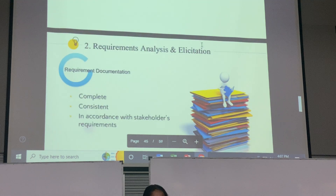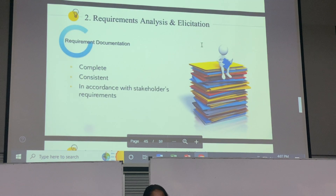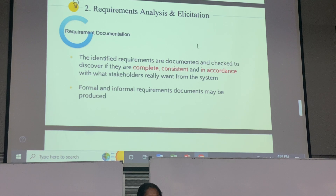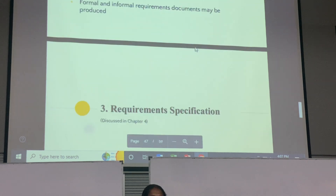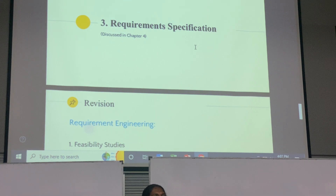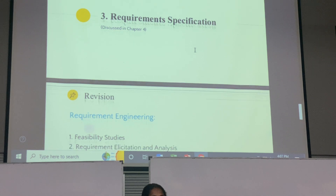The next topic is requirement documentation — what things you need in order to document the requirements. The next process is Requirements Specification, which I won't discuss in detail here since we already covered it in Chapter 4 — functional requirements and non-functional requirements.